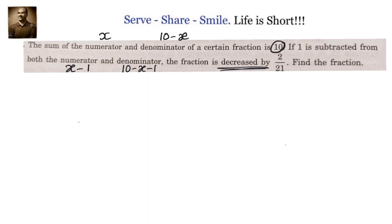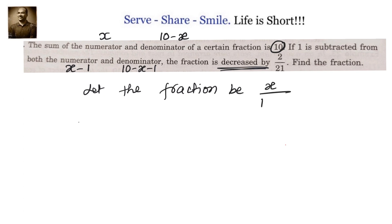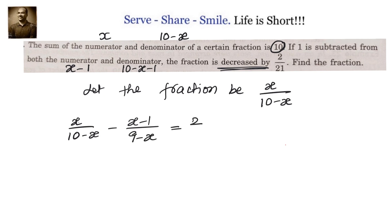That is 9 minus x. Now, the fraction is decreased by 2/21 when we subtract 1 from both numerator and denominator. So let the fraction be x by (10 minus x). Given to us that x/(10 minus x) minus (x minus 1)/(9 minus x) equals 2/21.